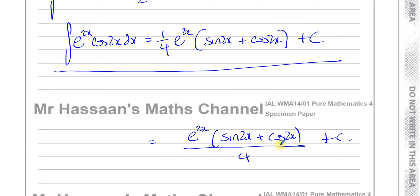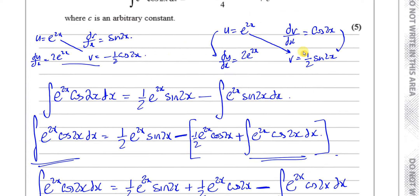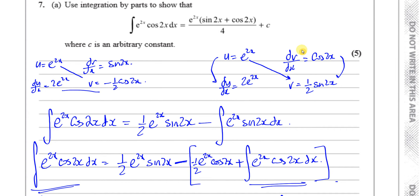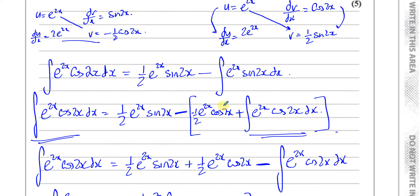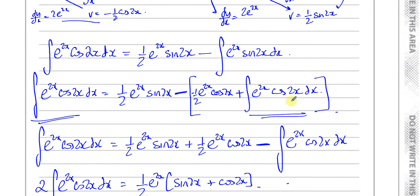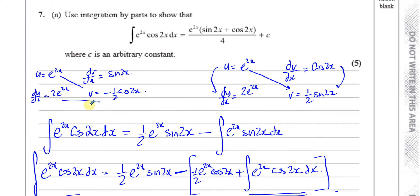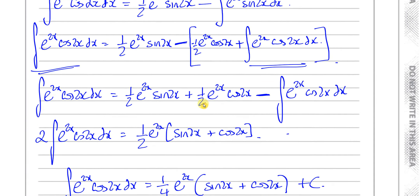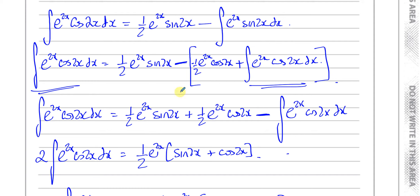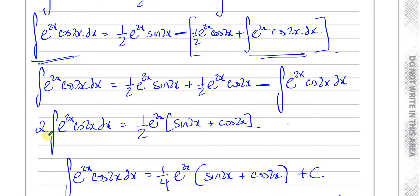As I said, it's a different style of question — I haven't seen one in a past C4 paper before. The key insight is: once you realise that nothing breaks down, you'll reach a stage where you end up with the same integral on both sides. You bring them together — now you have two of them — divide both sides by two, and you're left with your answer.